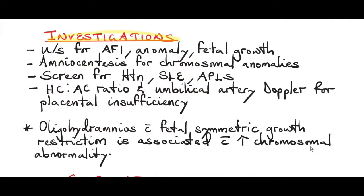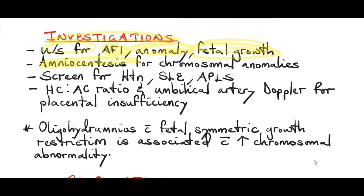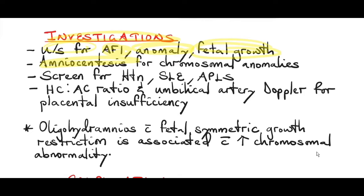Investigations include ultrasound to assess the amniotic fluid index, check for fetal anomalies, and assess fetal growth. Amniocentesis can be done to check for chromosomal abnormalities. It is also important to screen for maternal conditions that could cause oligohydramnios, such as hypertension, systemic lupus erythematosus, and antiphospholipid syndrome.